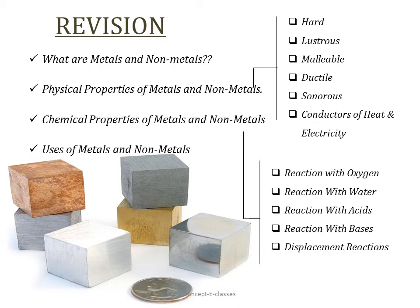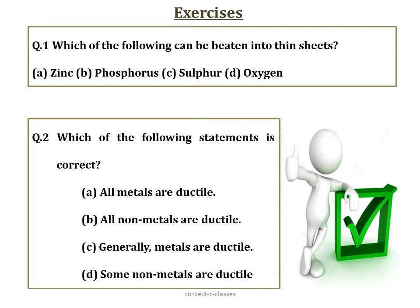Let us begin the exercises. Question number one: which of the following can be beaten into thin sheets? This property is called malleability and only metals have the property of malleability. Here, zinc is a metal while phosphorus, sulfur, and oxygen are non-metals, so obviously the answer is zinc.